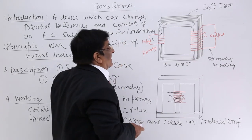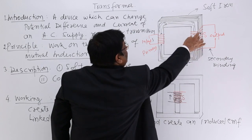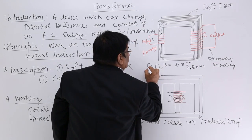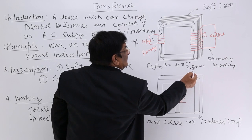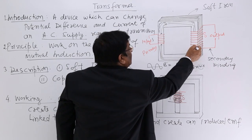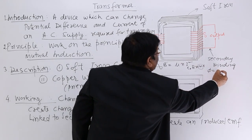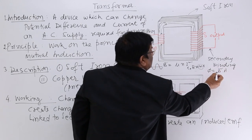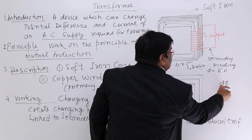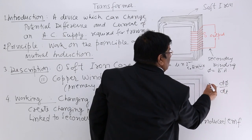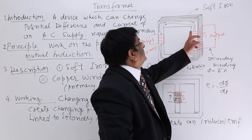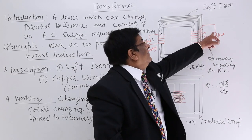The current in the primary is alternating: I = I₀ sin(ωt), so it keeps on changing. If the current changes according to omega, then B is changing. When B changes, the flux — which is B times A — is also changing. When the flux through the secondary changes, by Faraday's law this changing flux creates an induced EMF across the secondary coil. This is mutual induction, which we have studied in electromagnetic induction.